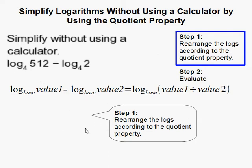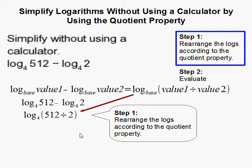What the quotient property says is if you have two logs with the same base and you subtract them, you can combine them and then divide the two values of the logs. So that means instead of doing this minus this, you can just divide these two values of the logs.